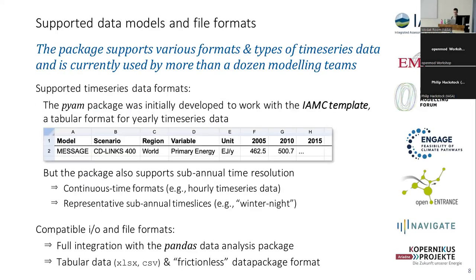On the package itself, starting with the data format: this is the IAMC standard, which is defined to have five index columns — model, scenario, region, variable, and unit. Then for each year, you have a value. This is the wide format. For those involved in energy systems modeling, we also support subannual time resolution for continuous time formats — so 12 o'clock, 1 o'clock, etc. — and categorical representations like 'winter night' or 'summer day'.